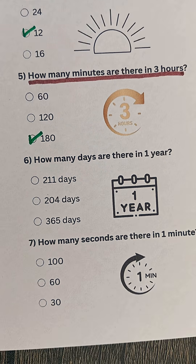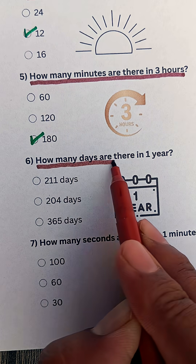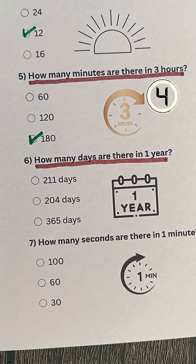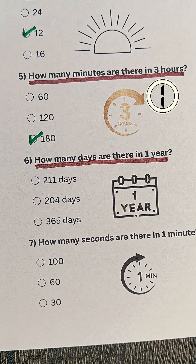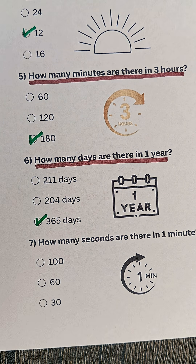Question 6. How many days are there in one year? Answer: 365 days.